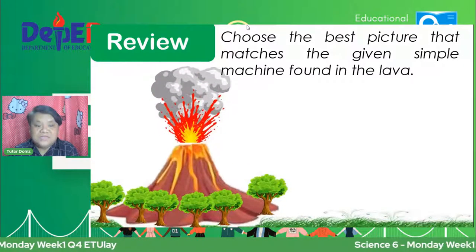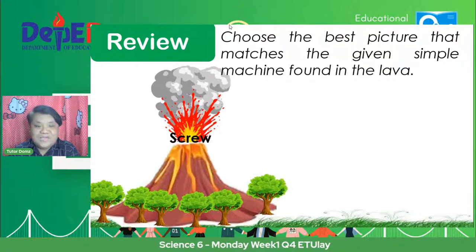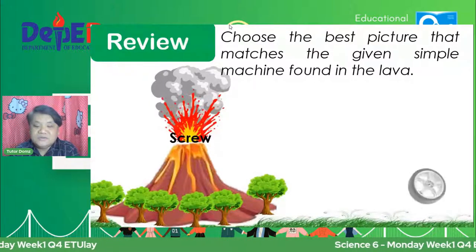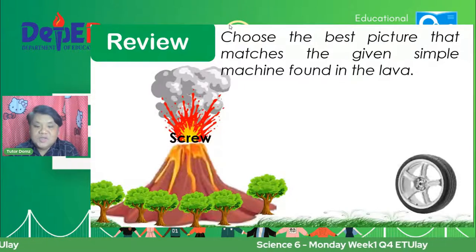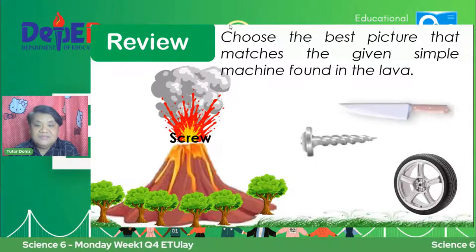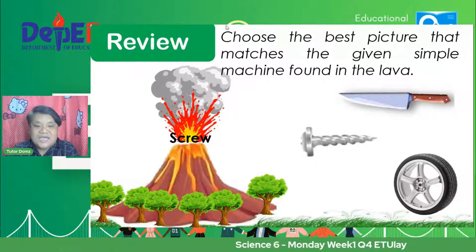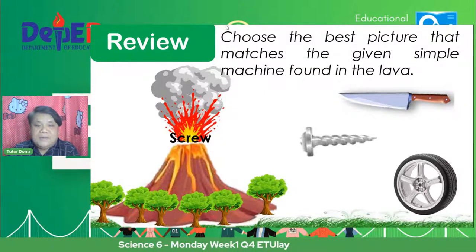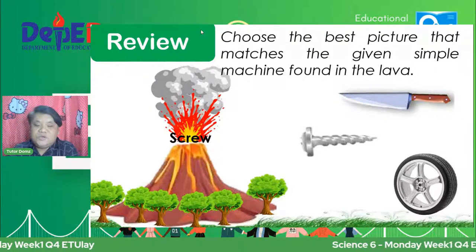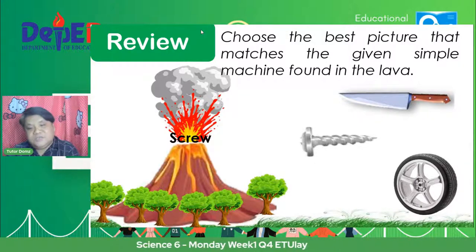Sumabog ang vulkan at lumabas ang screw. Ready na ang ating mga comment. Alin sa mga picture na ito ang screw? Is it the first picture, yung gulong; second picture, yung piece of metal; or the third picture, the knife? Alin kaya ang screw based on the example sa ating lava? Is it the gulong, the piece of metal, or the knife?